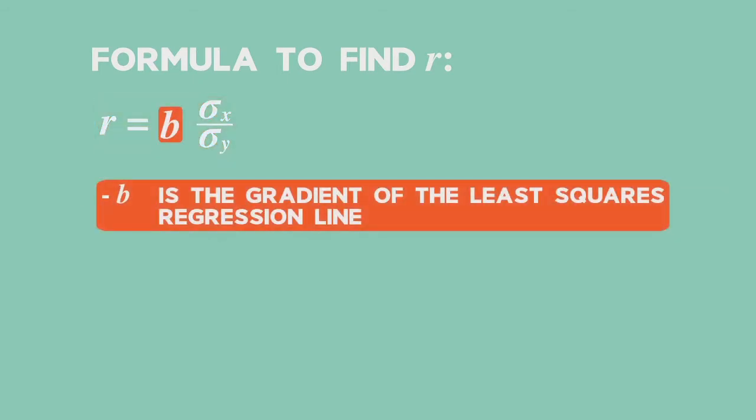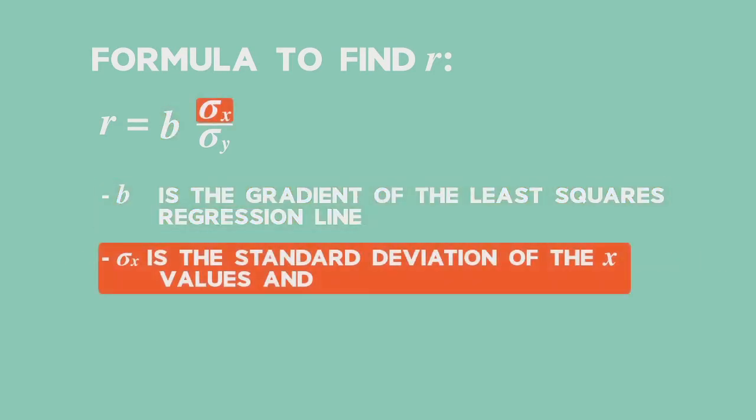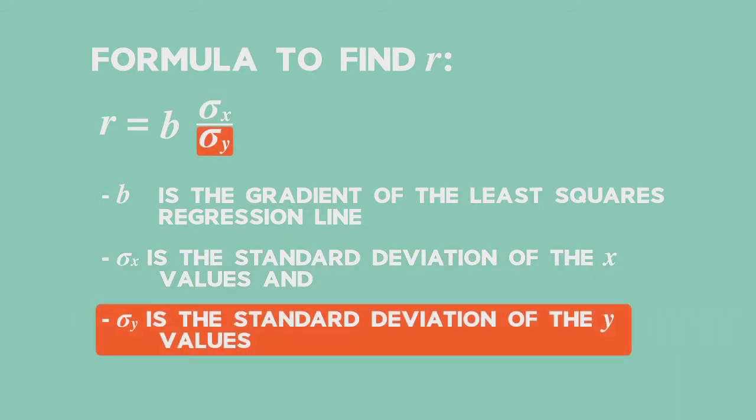In grade 12, you use the correlation coefficient formula r equals b, where b is the gradient of the least squares regression line times the standard deviation of x divided by the standard deviation of y.